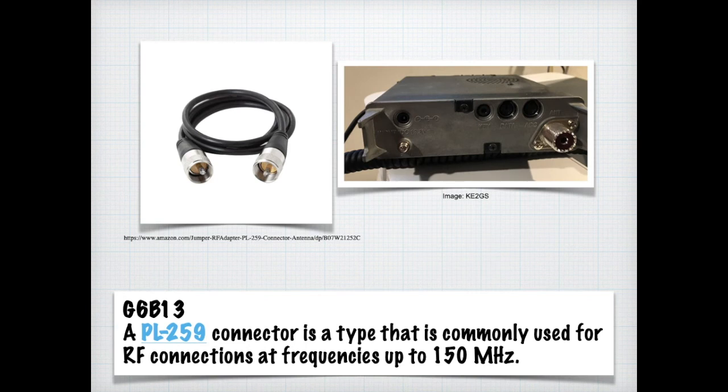An extremely common type of connector is the PL259. The image on the right is the back of a Yaesu FT-818 transceiver and the connector is used for the HF portion of that radio. On the left is just a jumper cable. For the exam, you need to know that a PL259 connector is a type that is commonly used for RF connections at frequencies up to 150 megahertz. So basically, from the HF bands up to 70 centimeters.